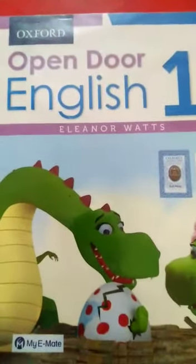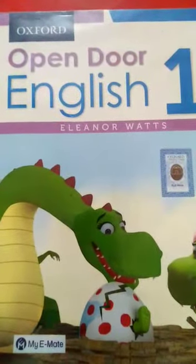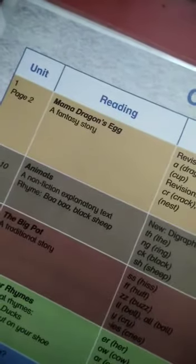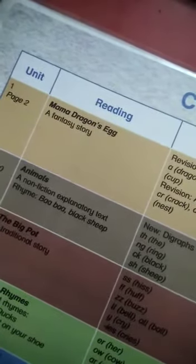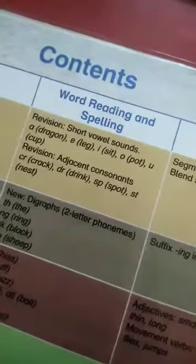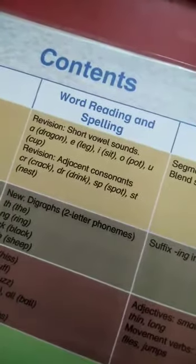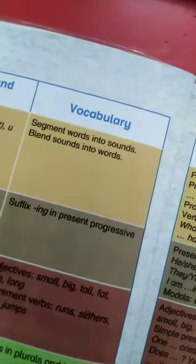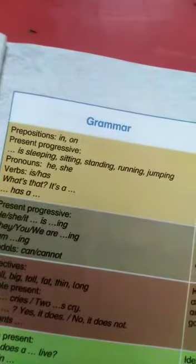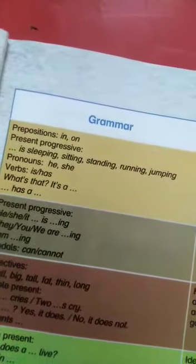Assalamualaikum. This is our English book 'Open Door' for Class One. This is Unit Number One: Mama Dragon's Egg. In this unit we will do the reading of the lesson, then the revision of vowels and adjacent consonants, then we'll learn some vocabulary from the lesson, then some parts of grammar, punctuations, listening and speaking, and the composition.